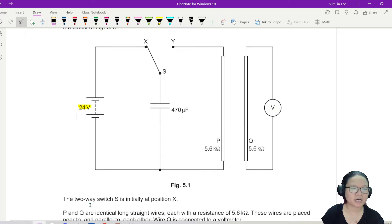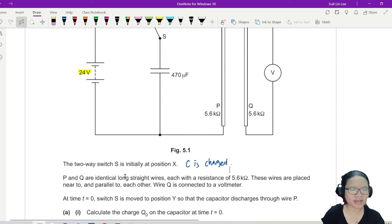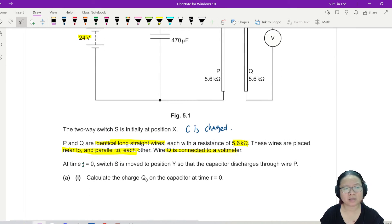A capacitor of capacitance 470 microfarad is connected to a battery 24V. A two-way switch S is initially positioned at position X, so that means I charge the capacitor. P and Q are identical long straight wires, each with a resistance of 5.6 kilo-ohm. These wires are placed near to and parallel to each other. Wire Q is connected to a voltmeter. At time t equal to zero, switch S is moved to position Y so that the capacitor discharges.